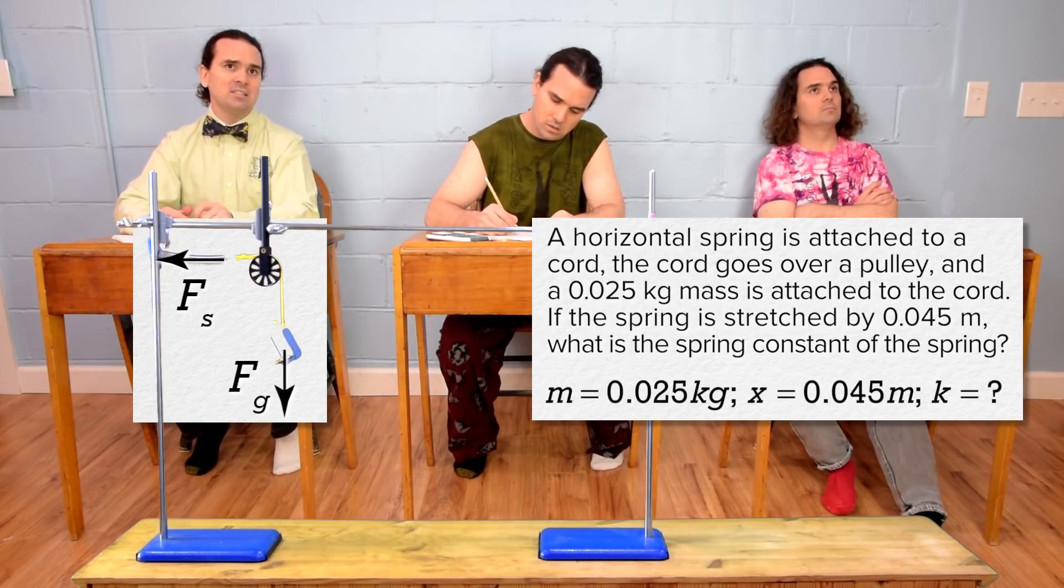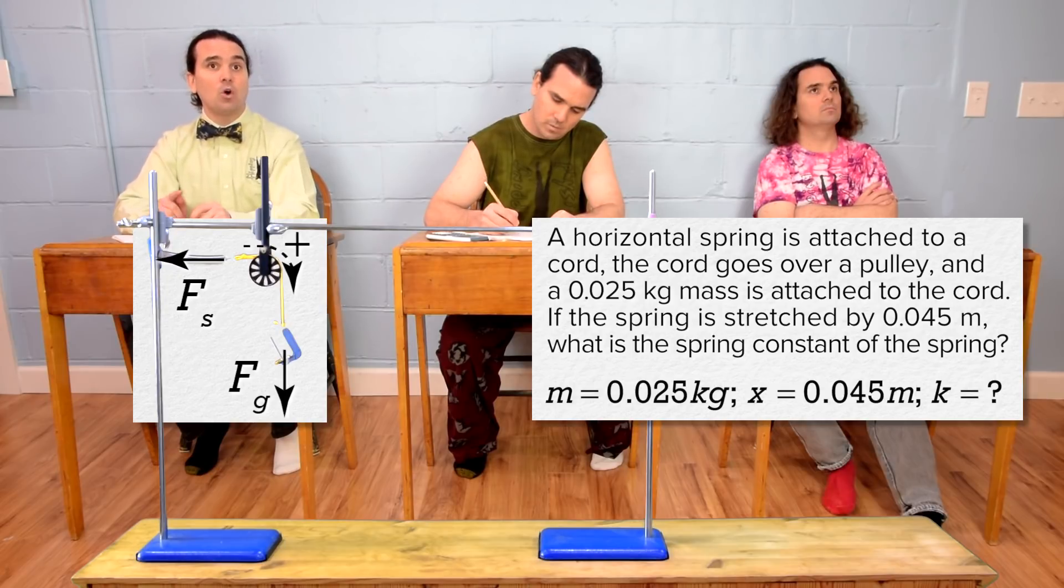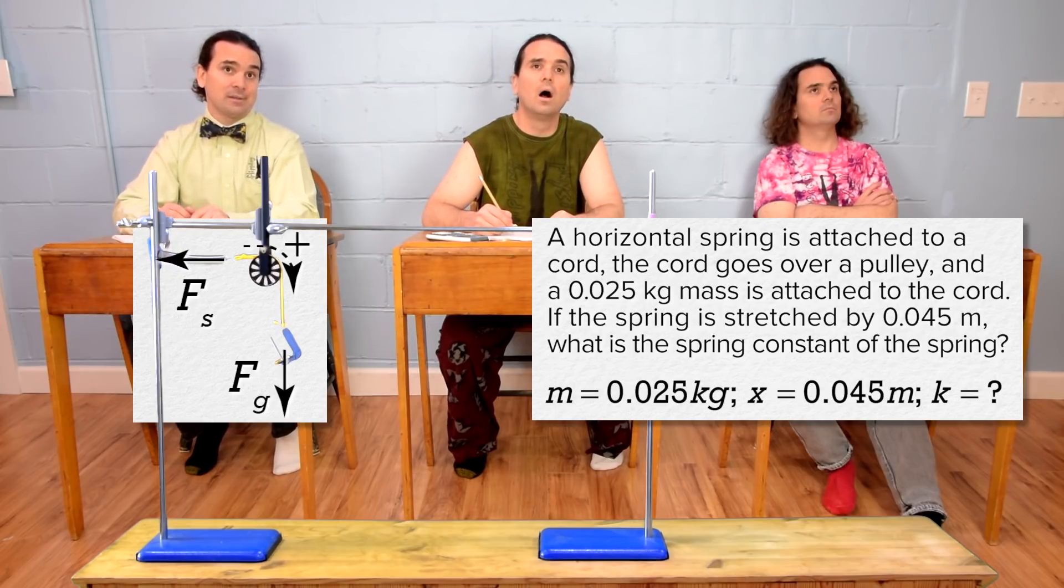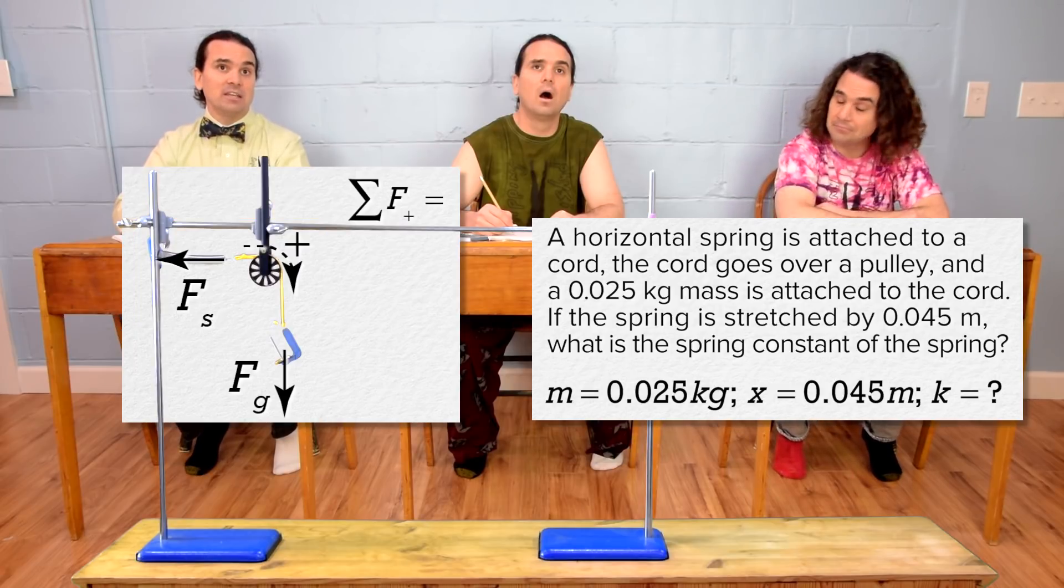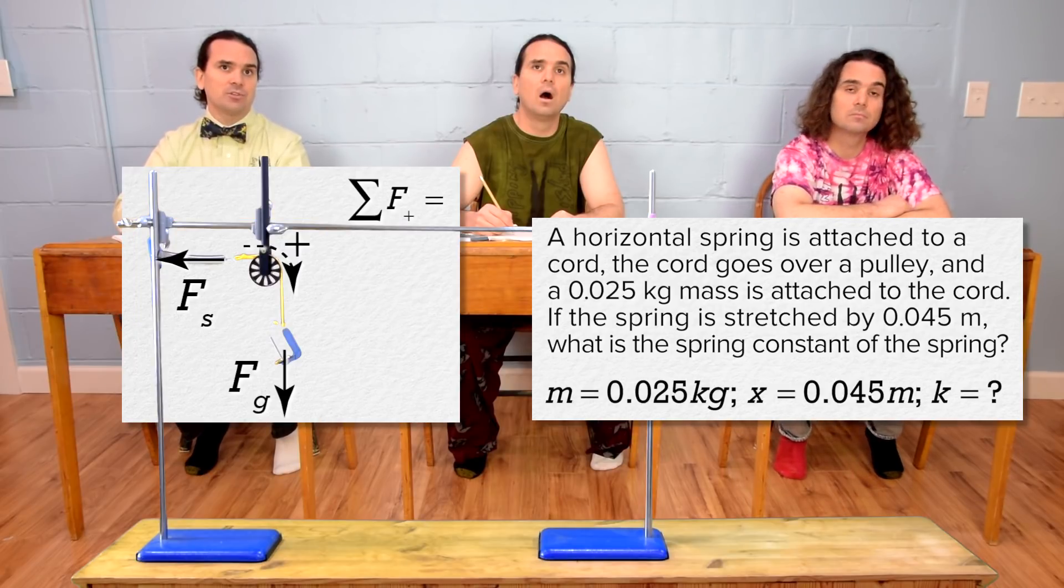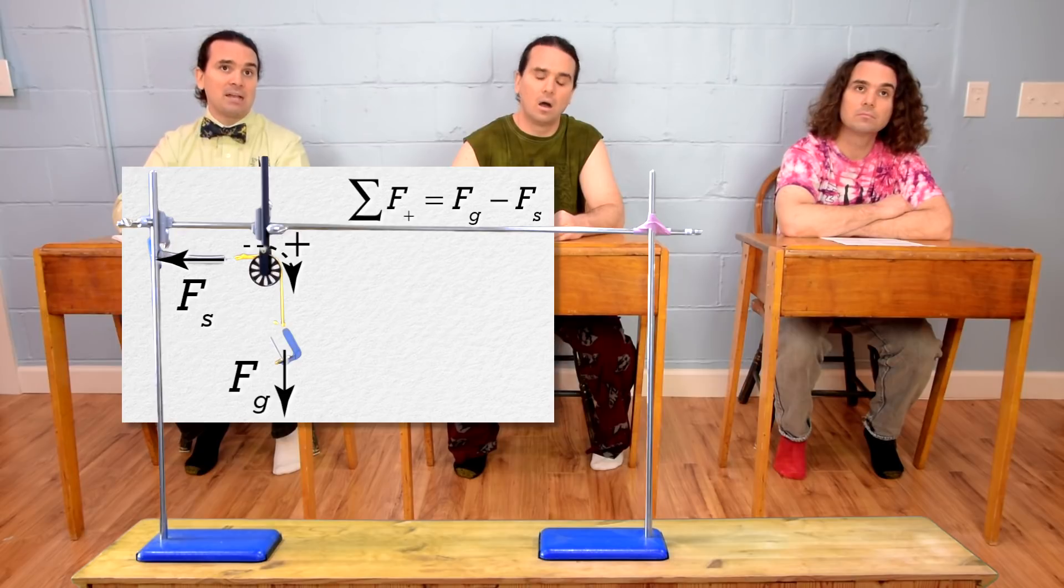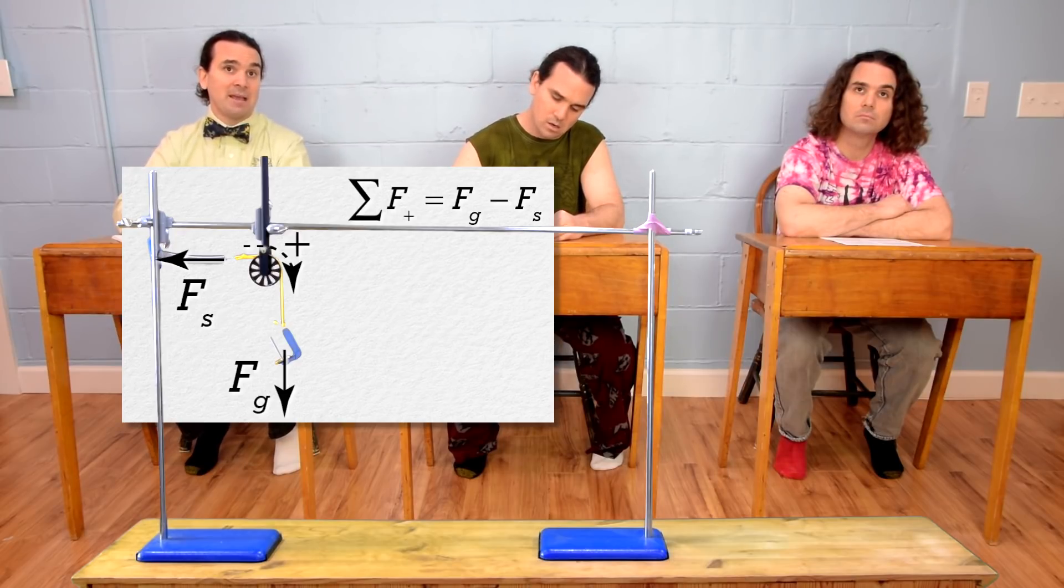Let's define the positive direction as to the right, over the pulley, and down. Now we can use Newton's second law. The net force in the positive direction equals the force of gravity, which is positive, minus the force of the spring. The net force also equals mass times acceleration in the positive direction. The acceleration of the mass hanging is zero,